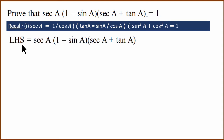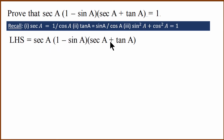First, we start with the left-hand side. The left-hand side is: secant A multiplied by (1 minus sin A) multiplied by (secant A plus tan A). This is what is given in the question — we have just written it down.